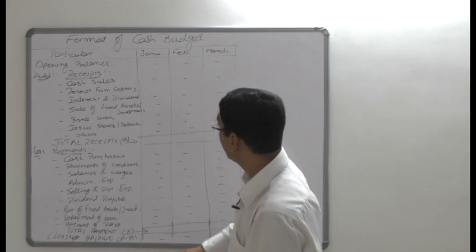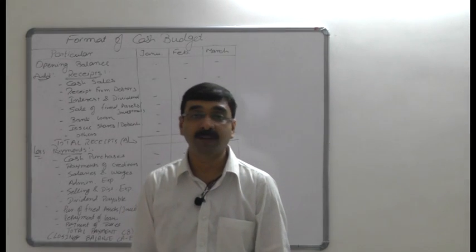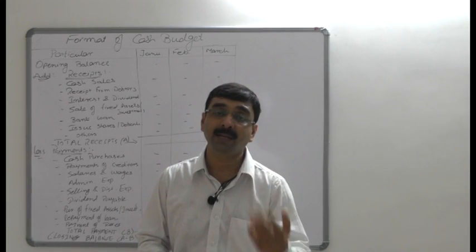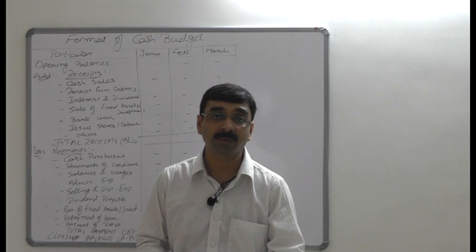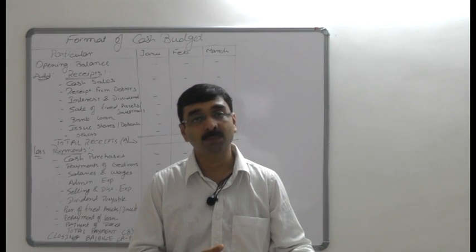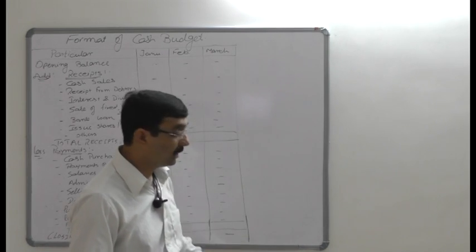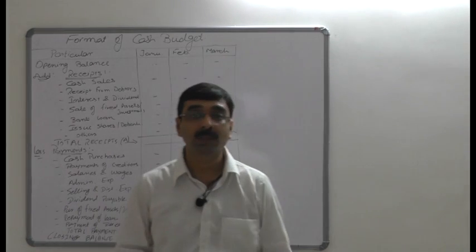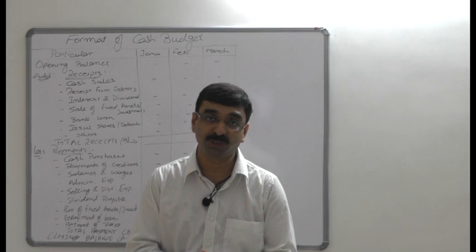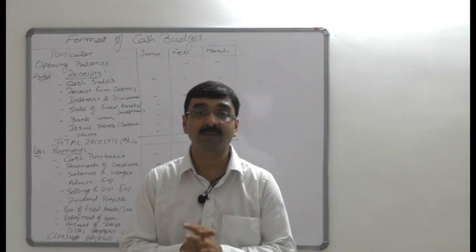The closing balance of one month is carried forward as the opening balance of the next month — in this case, February. The same process is repeated: receipts are added, payments are deducted, and finally the closing balance for the month of March is obtained. This is the complete cash budget format.